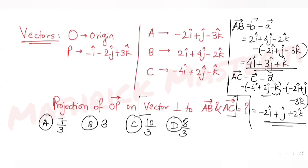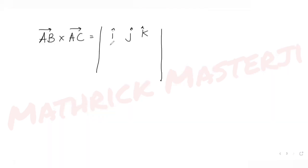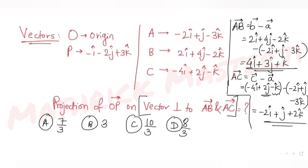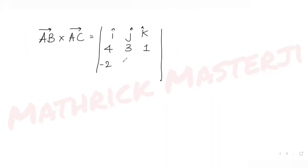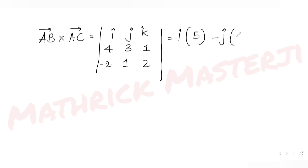Setting up the cross product of AB and AC using the determinant: i j k, with AB as 4, 3, 1 and AC as minus 2, 1, 2. For the i component: 3 times 2 minus 1 times 1 equals 6 minus 1 equals 5. For the j component: minus of (4 times 2 minus 1 times minus 2) equals minus of (8 plus 2) equals minus 10. For the k component: 4 times 1 minus 3 times minus 2 equals 4 plus 6 equals 10.